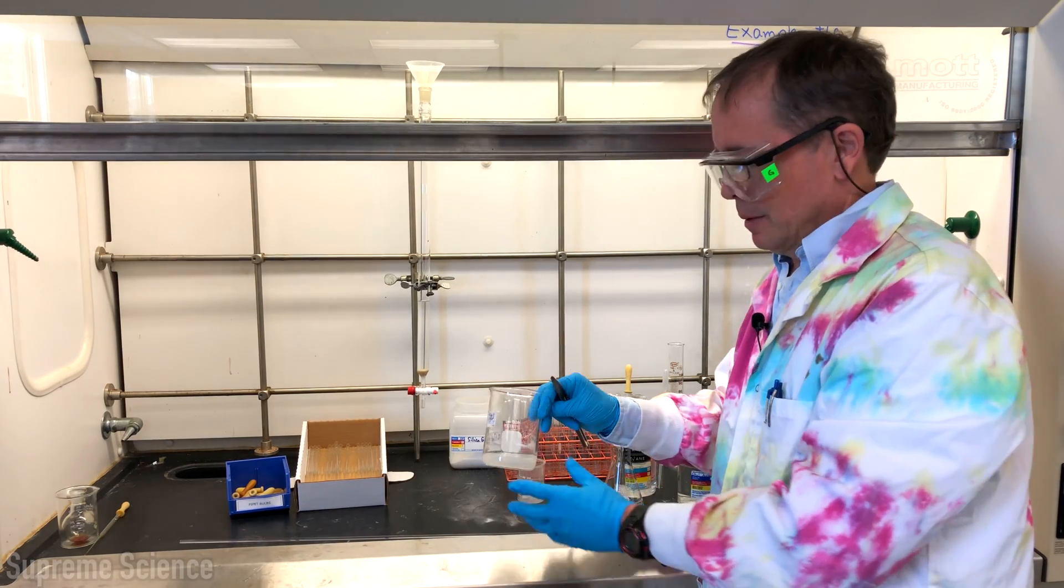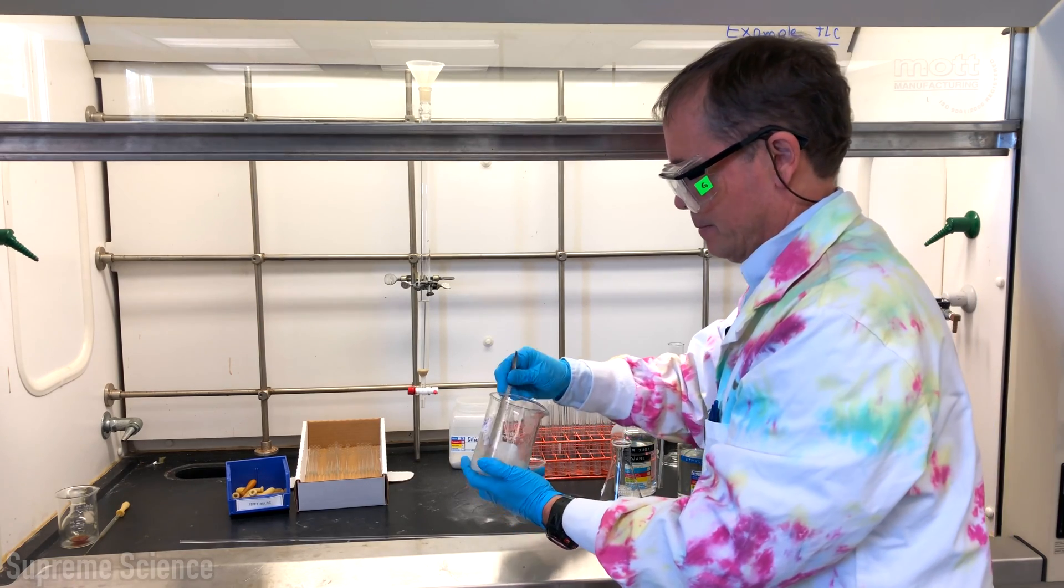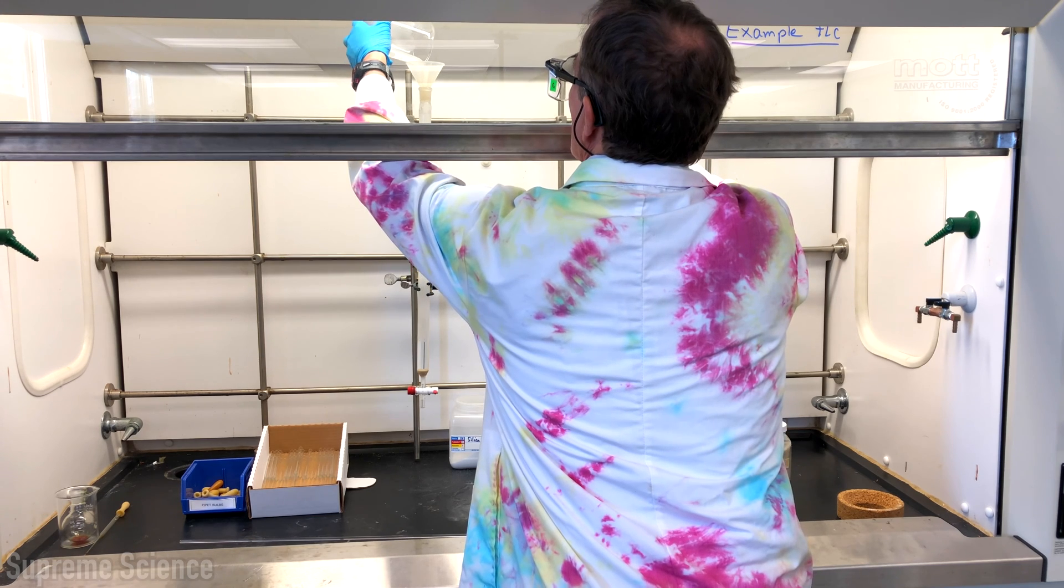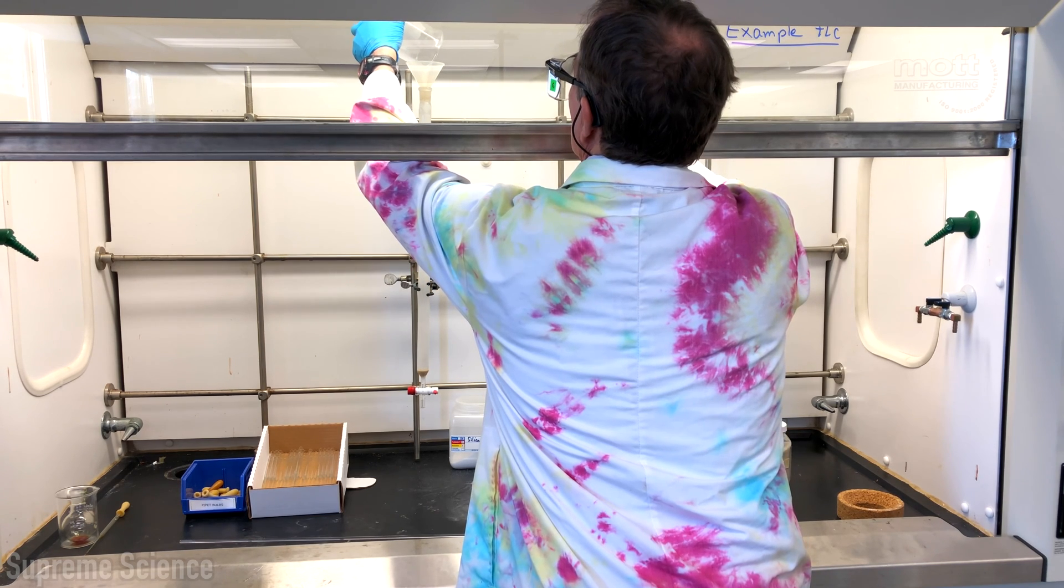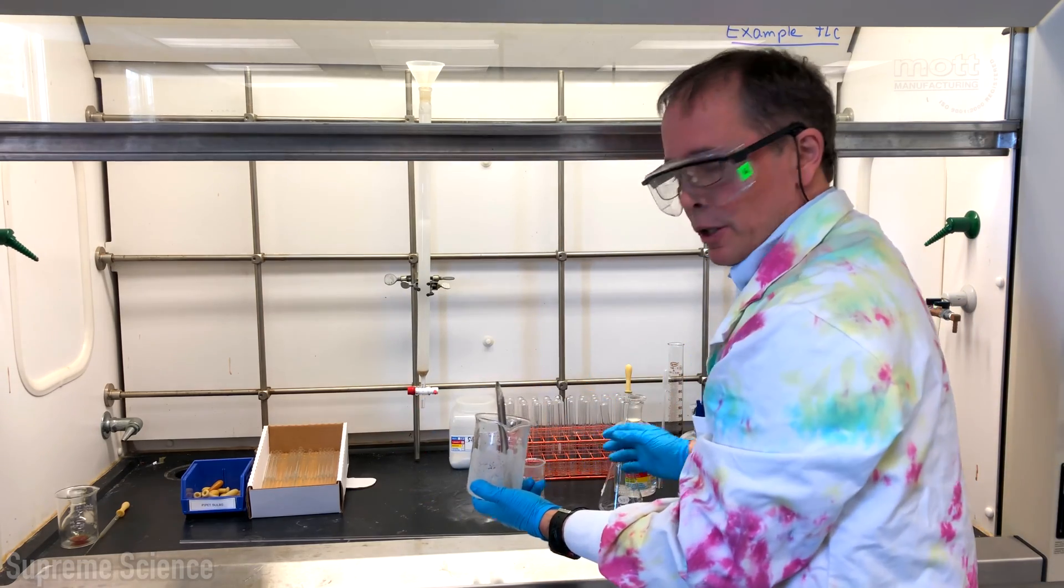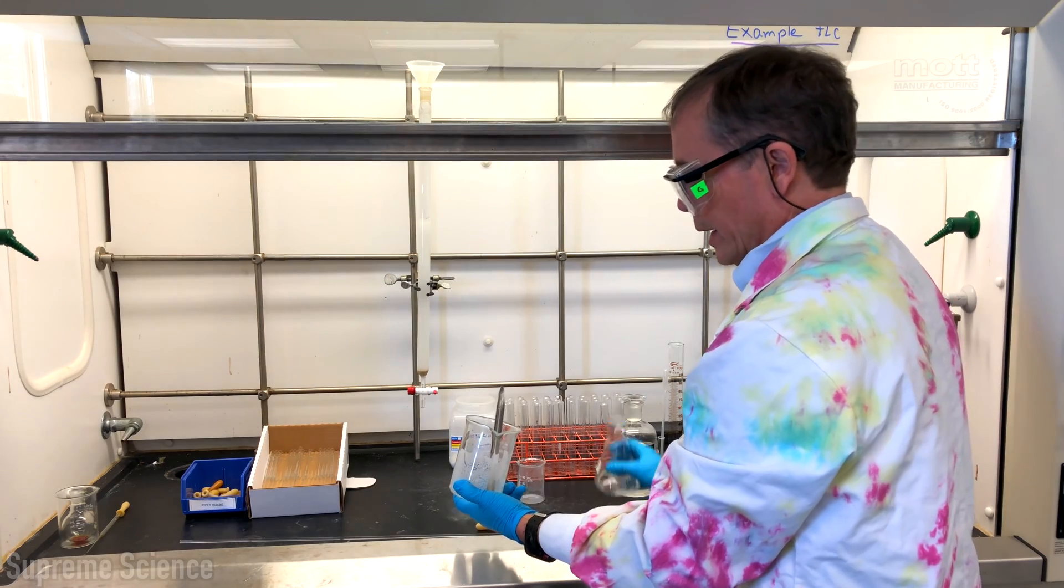Using a plastic funnel we pour the slurry into the column. Wash excess silica gel into the column using a bit more of our two to one eluent.